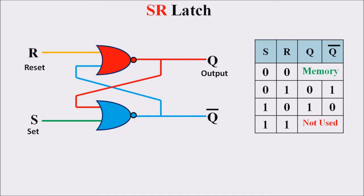Before going to the D Latch concept, let us refresh the SR Latch, because the SR Latch is partially used in the D Latch concept. In an SR Latch we use the set-reset concept. The SR Latch using NOR gates is shown in this figure. We use two NOR gates in which the output of one NOR gate is fed as the input of the second, and the second NOR gate output feeds back as the input of the first. This cross-coupling results in the formation of the SR Latch. S stands for set, R stands for reset, and the output is represented as Q.